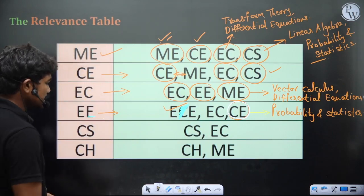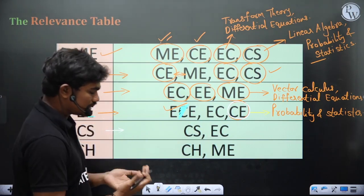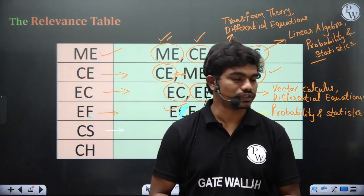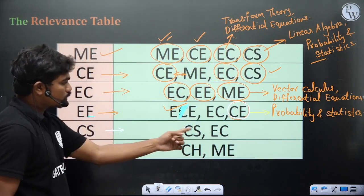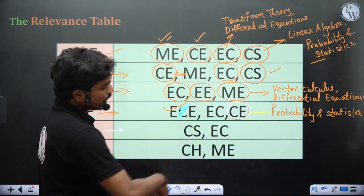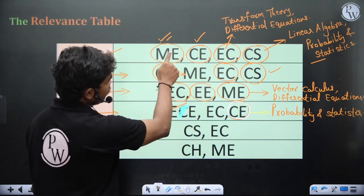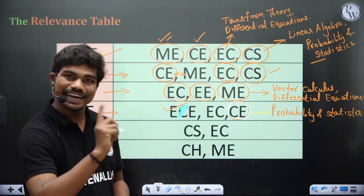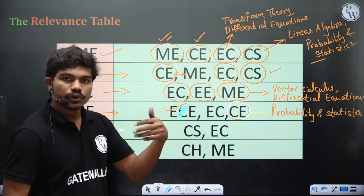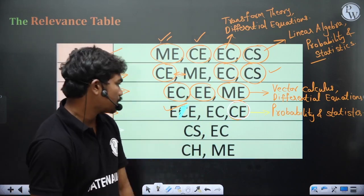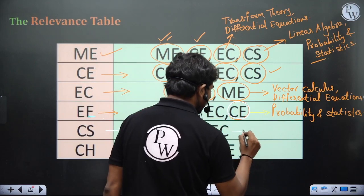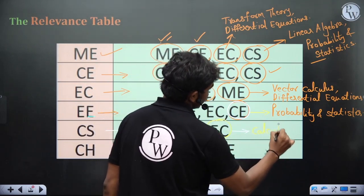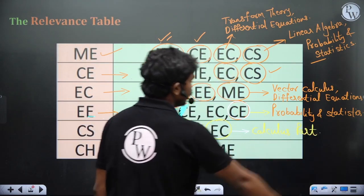Coming to CS — CS has a bit less syllabus compared to other branches. In CS we only have three chapters: linear algebra, probability and statistics, and basic calculus. Along with CS, you can use EC questions for the calculus part, because mechanical, civil, and EC — these three branches have strong relevance in calculus questions. It's good enough to solve any one of those three branches; I've kept EC so you can look at integrals in a nice sense.